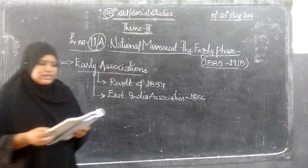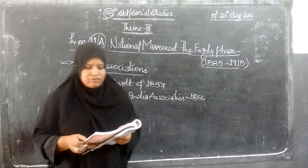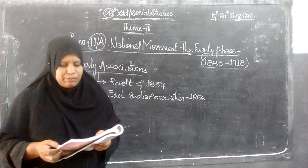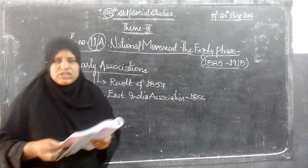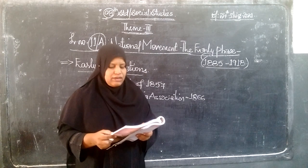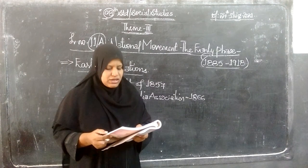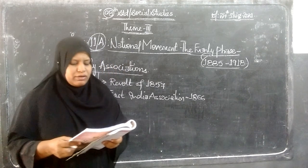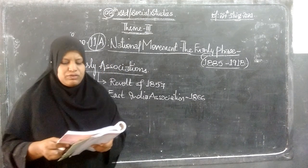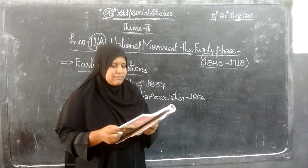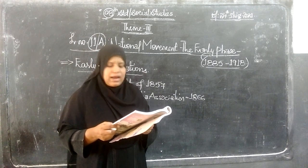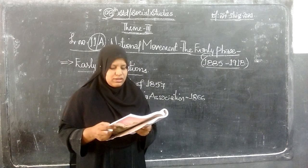In the Revolt of 1857, soldiers, ordinary peasants, farmers, artisans, craftspersons, governors, landlords, and even princes joined the struggle against the British. While the movement was opposed to the British, they did not have any new vision for the country — in fact, they wanted to return to the old system of kings and queens in India.